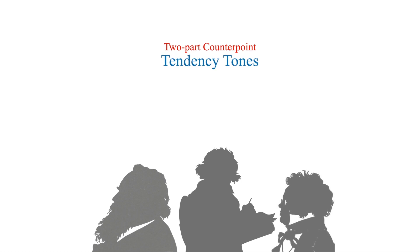Diatonic tonal music contains two tendency tones: the leading tone, also known as scale degree 7, and chordal 7ths, as in 2-7 or 5-7.